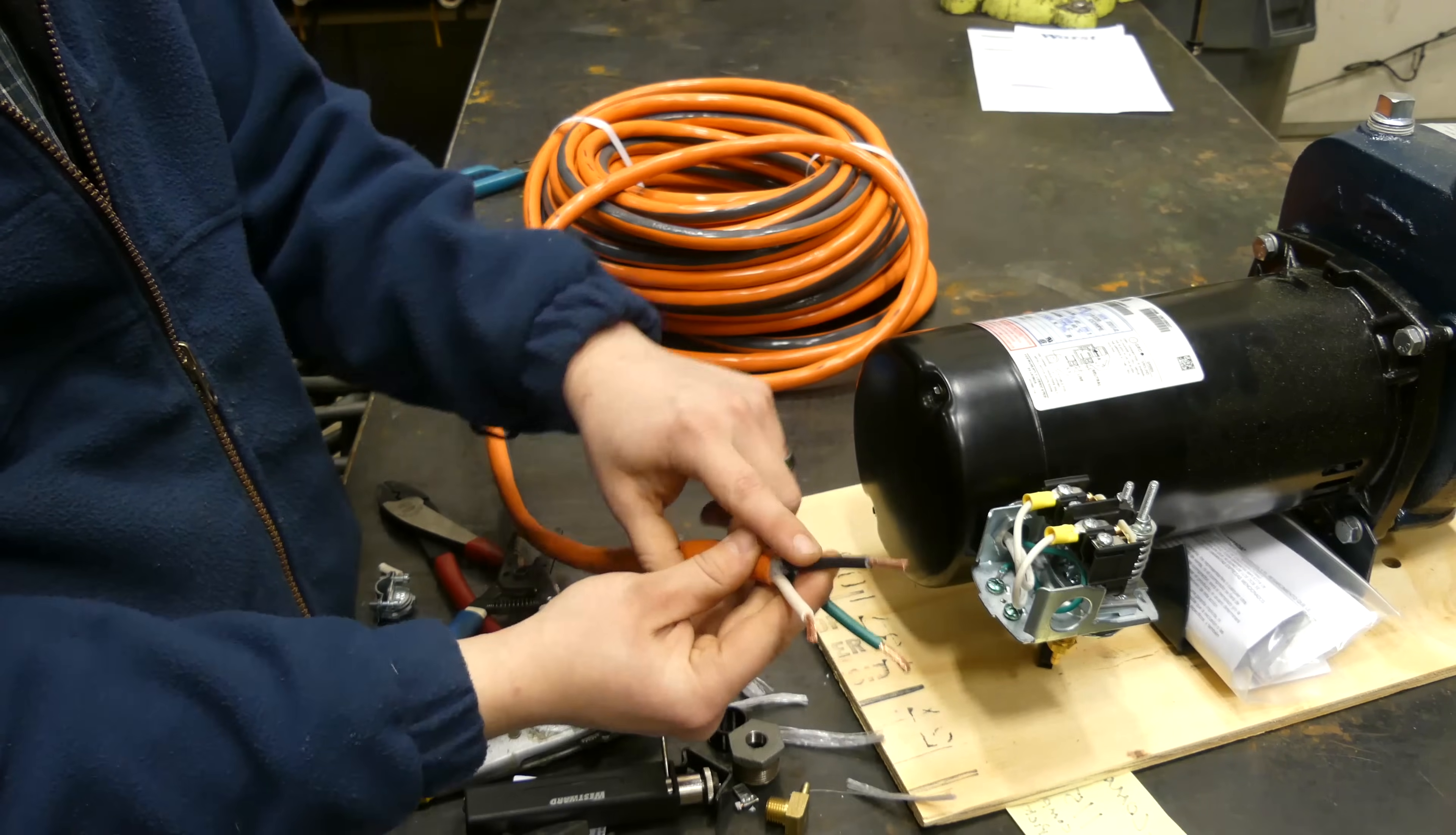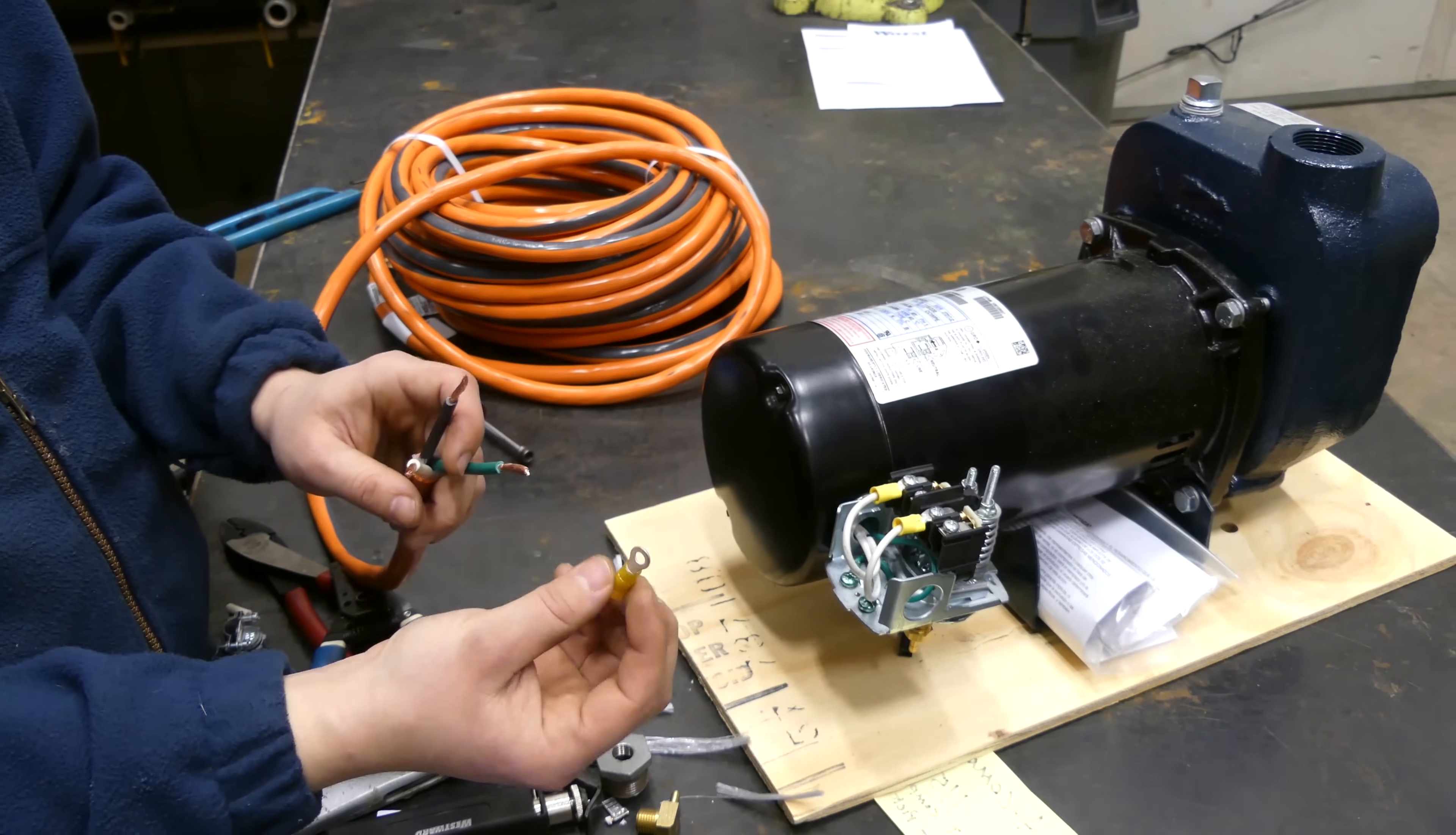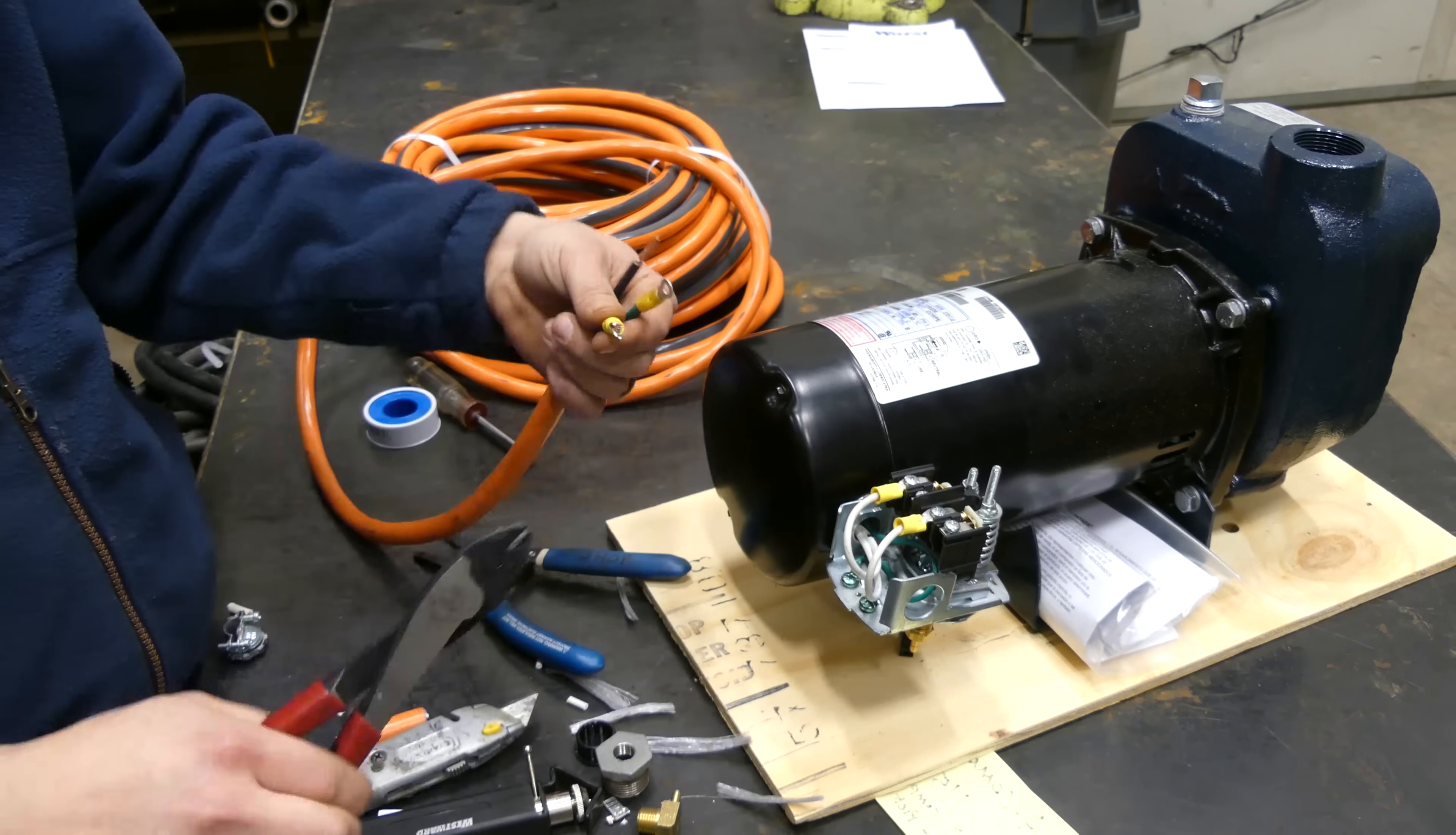So we know that our black is going to go with our black over on L1. Our white is going to go over here. And our ground, obviously, is going to go down with the ground. So with the ground style, I'm going to use a closed connector similar to the one that we just put in. And then we're doing the fork connectors on the other ones so that they're easy to pull off of there and do whatever you need to do.